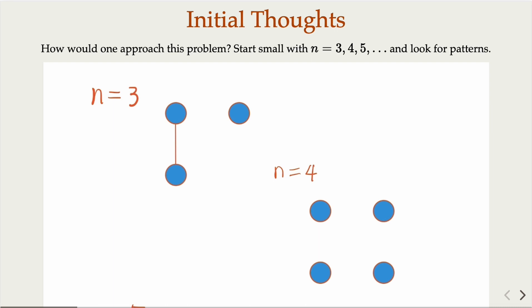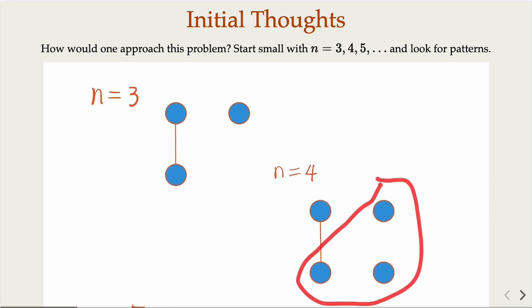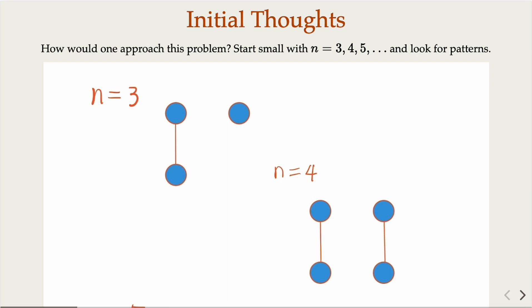How about n equals 4? In that case, if you pick any three, we need to make a connection. At least these three have one handshake. Now for the new fourth person, we have an issue — we need to make another connection in order to satisfy the constraint. Do we need more? The answer is no.